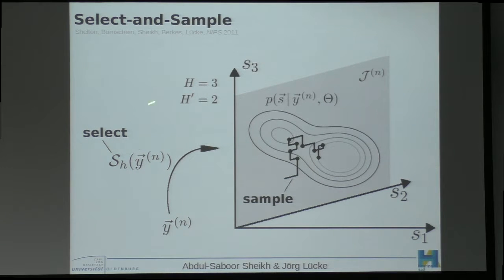In this example, we use a three dimensional latent space and first select the two latent dimensions S2 and S3 that contain most posterior mass, and then use a Gibbs sampler to approximate the posterior structure within this subspace.